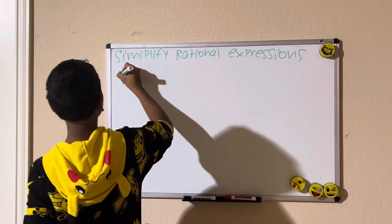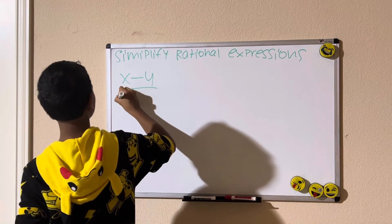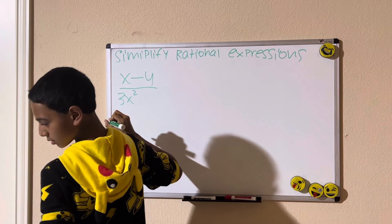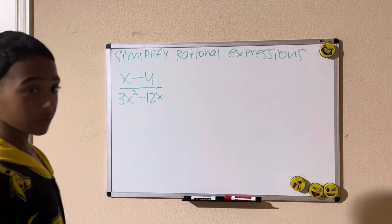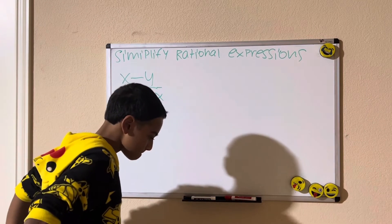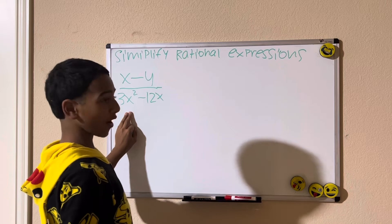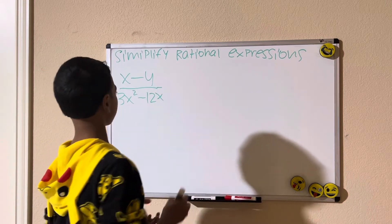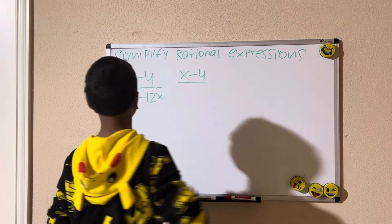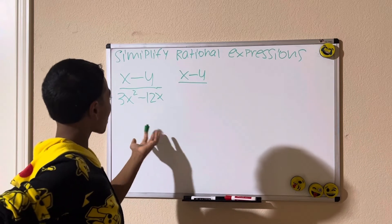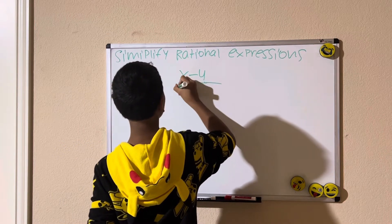I'm going to give you another one. Let's say (x minus 4) divided by (3x squared minus 12x). Simplify this. Alright, we need to factor — we're going to factor this bottom expression. The greatest common factor between 3x squared and 12x is 3x.